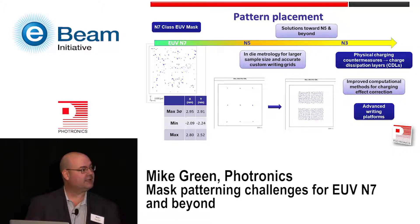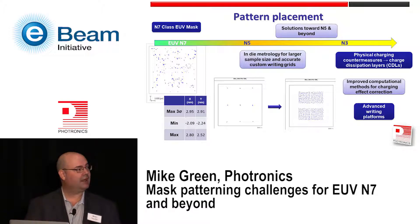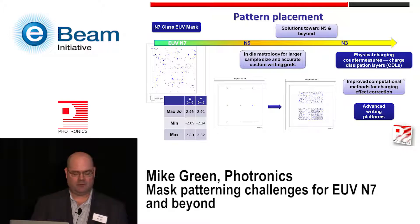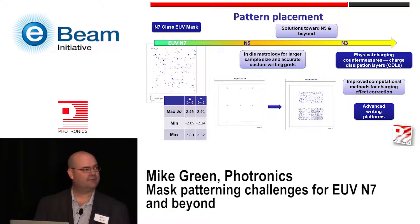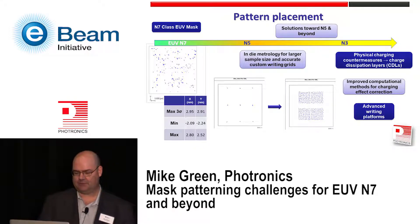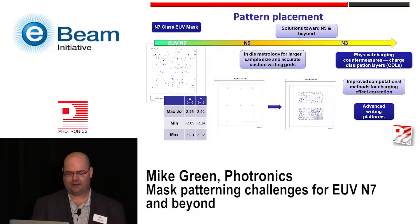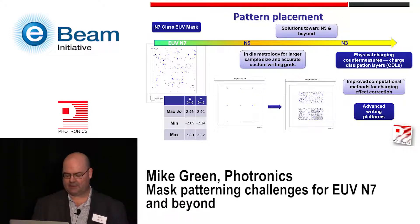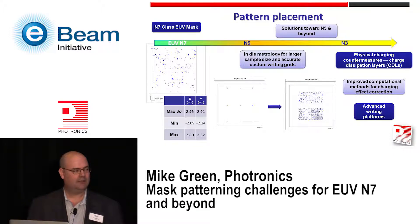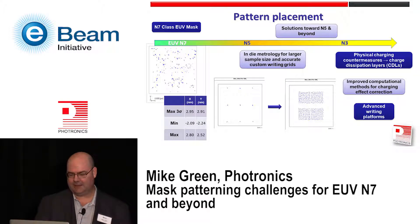Pattern placement is also very important. Here's an example of a 7 nanometer class mask showing a little less than 3 nanometer 3-sigma — and this is without charging effect correction. But solutions into N5 and beyond are going to require improvements, including in-die metrology to maximize sample size and build more accurate custom layer-by-layer grids to write these layer masks to. Physical charging countermeasures like charge dissipation layers, improved computational methods, and e-beam company charging effect correction algorithms are needed, but ultimately advanced writing platforms are going to be needed into 5 nanometer and beyond.